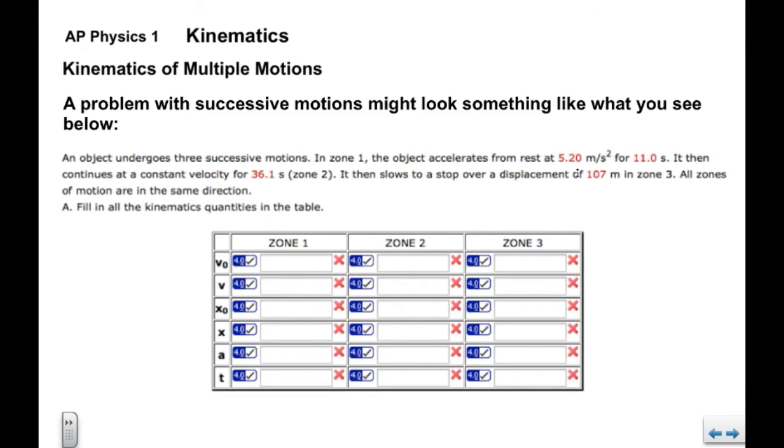We have some data here. About Zone 1, here's the acceleration that accelerates from rest. We have length of the time interval. We then have some information about Zone 2, that it continues at a constant velocity for a certain amount of time. Then it's going to slow to a stop over a particular displacement in Zone 3.